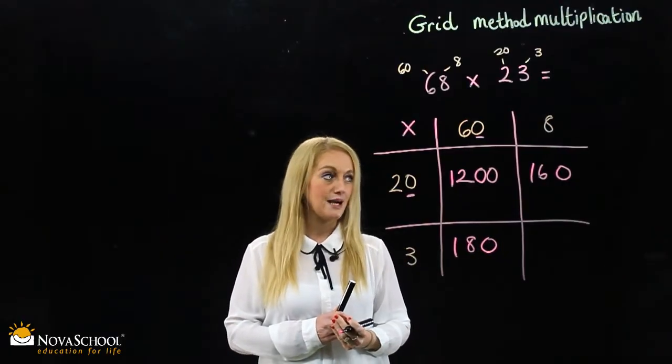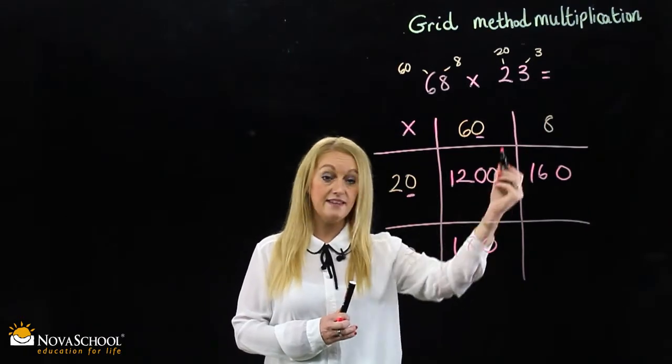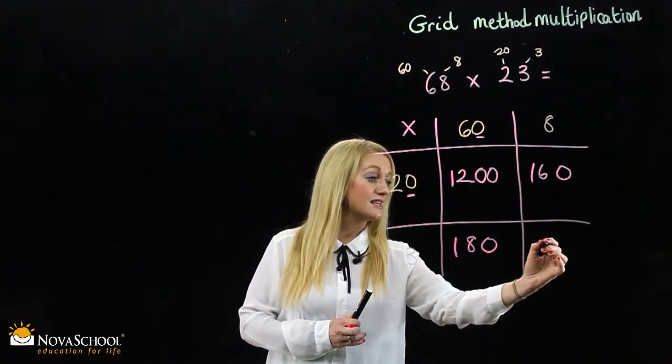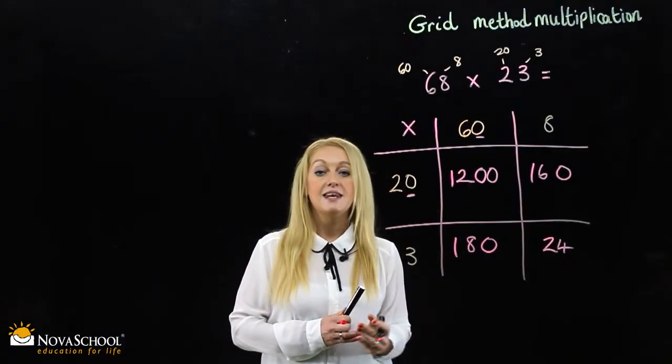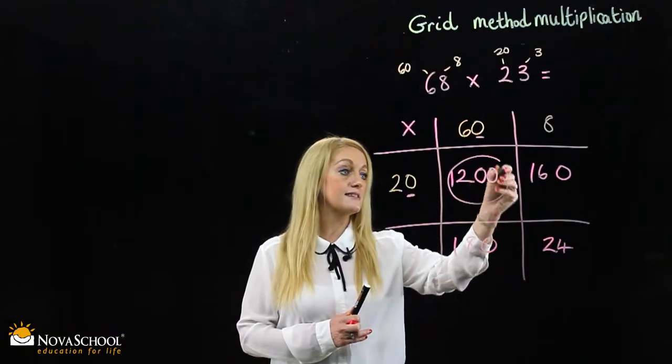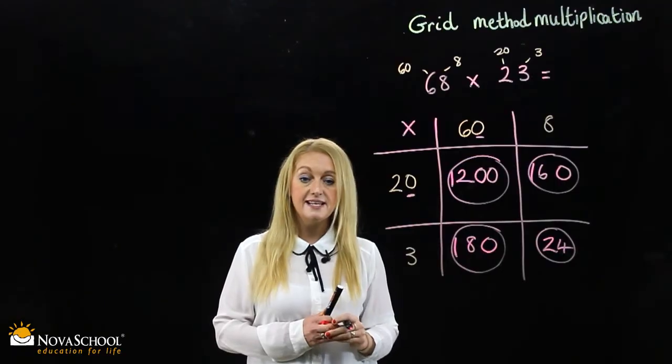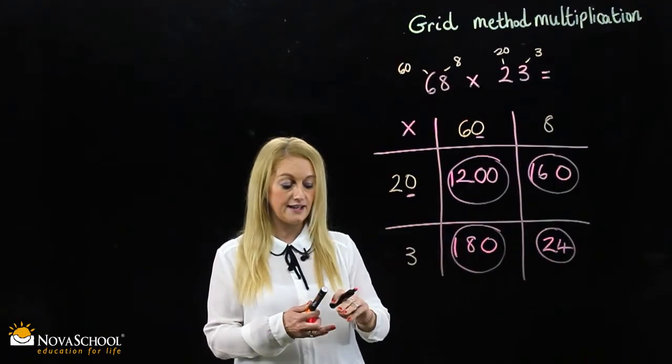Okay, now we take the 8 and the 3 or the 3 and the 8 and we multiply them and we get 24. Now what do we do? We take our 4 digits that we have, our 4 answers that we have created and we add them together for the final answer.